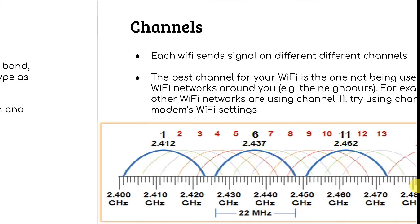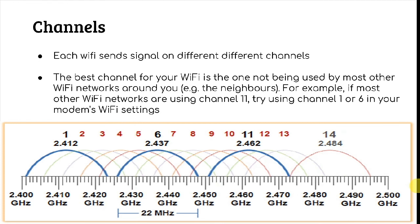Now what is a channel? Each Wi-Fi sends signal on different channels. The best channel for your Wi-Fi is the one not being used by most other Wi-Fi networks around you, meaning your neighbors aren't using the same Wi-Fi channel that your Wi-Fi setting is using. For example, if most Wi-Fi networks are using channel 11, then you can switch to channel 1 or 6.